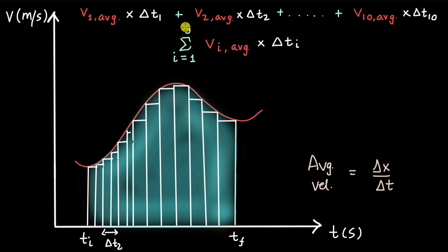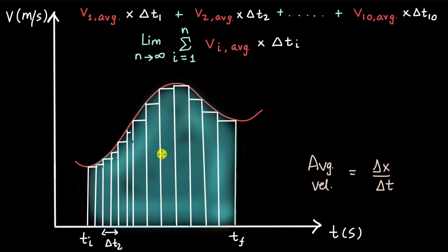Let's make it more general. Say we have N number of such sections and rectangles. If we keep on decreasing delta T — making it thinner and thinner — we get an infinite number of sections, which happens when N approaches infinity. Now you have an infinite number of rectangle sections covering the blue shaded area. This is your displacement — the blue shaded area — with infinite sections.